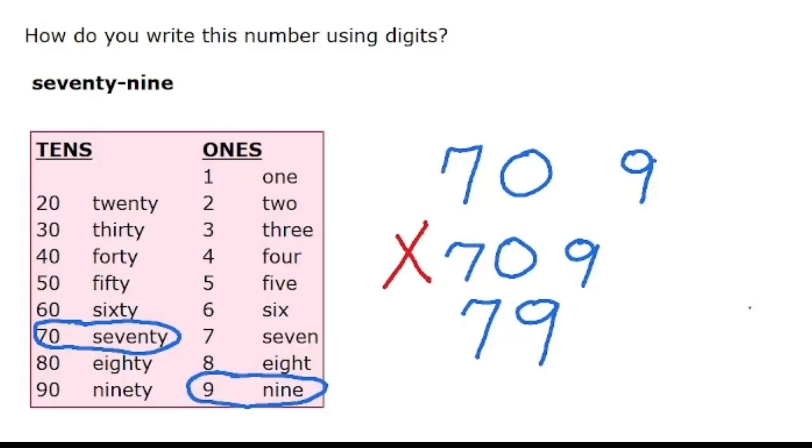and then 71 is just like this, 71. Then 72 is like this, 73 is like this, and so on.